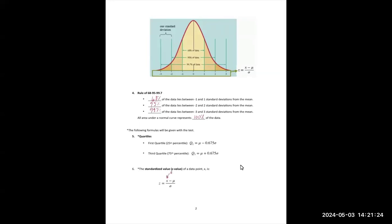In the Z-score formula, X is your data value — it might be an actual age — and mu is the mean, or median, since when data is bell-shaped the mean equals the median. Sigma is the standard deviation. The Z-score is the number of standard deviations away from the mean: the numerator X minus mu is the deviation from the mean — how far that value is from the mean — and then we divide by sigma because we're measuring that distance in standard deviation units.